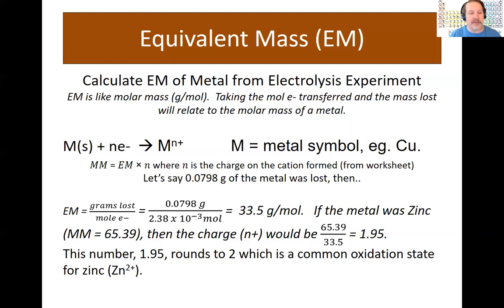And if you know it was zinc, we could take the actual molar mass of zinc divided by this new equivalent mass, it's going to be equivalent to the charge of the cation. In this experiment I get 1.95 and that rounds to 2, and that's a pretty good answer to get us close to the known oxidation state of plus 2 for zinc. That's a common one. Alright, so that should help you through the equivalent mass calculation.